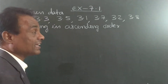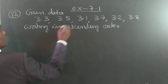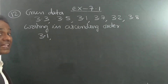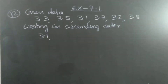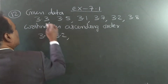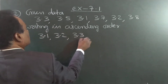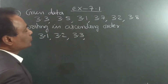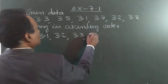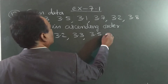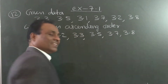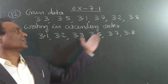Ascending means smallest to greatest. Arrange in ascending order — smallest to greatest. So: 3.1 is first, then 3.2, then 3.3, then 3.5, then 3.7, then 3.8. Like this, we arrange in ascending order, smaller to greater.